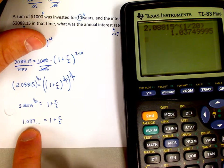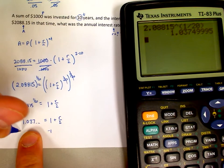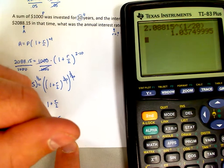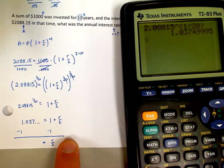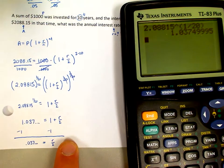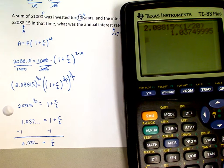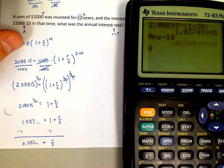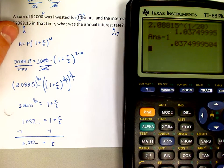Next step is when I get this value, I need to subtract the 1 from both sides. That gives me just the R over 2 on the right-hand side. On the left-hand side, it's going to be the 0.037 now. So on my calculator, I'm just going to subtract 1. Unrounded, notice.